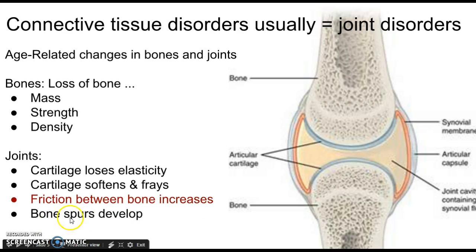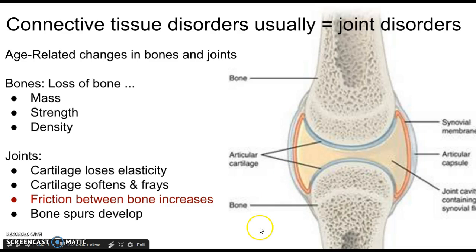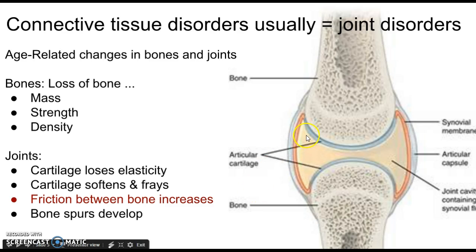Anytime you have friction, you can develop bone spurs — little outgrowths of bone where they shouldn't be. It's similar to a wisdom tooth with no opposing tooth to grind against; it grows weird with sharp points. Bones work the same way. As cartilage wears out, bones can develop these spurs, which can be quite painful. The articular cartilage lines the top of the bones, and you need to get very familiar with that term because when we talk about osteoarthritis, it's all about the degeneration of articular cartilage.